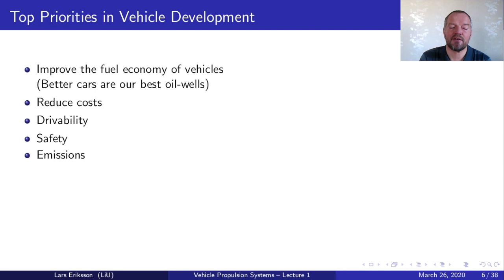The top priorities in development are fuel economy — one saying is that better cars are our best oil wells. Another task is to reduce costs, which gives the company better margins. Then to sell vehicles, you need to make them drivable so the driver feels comfortable and safe. Safety is also an important part, and then emissions are extremely important for the sustainability of our society and the health of human beings and the world.